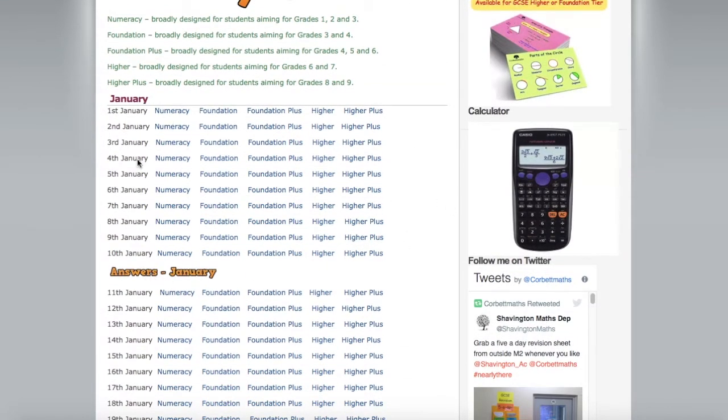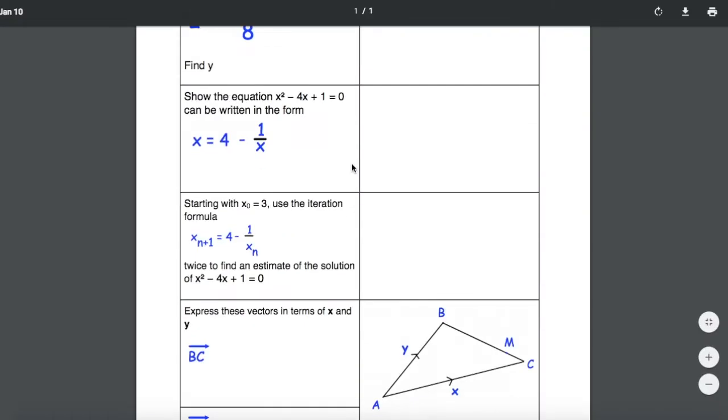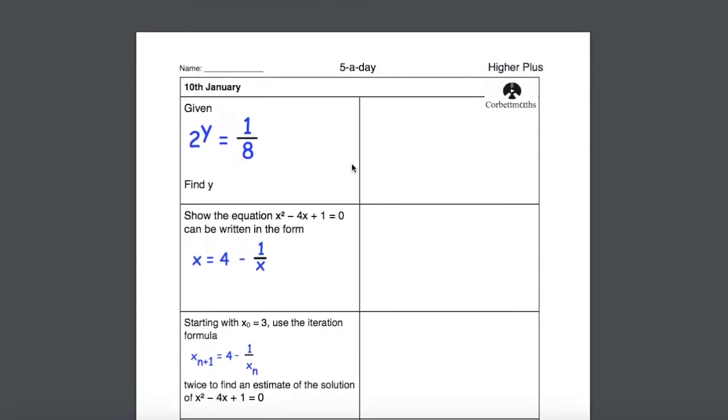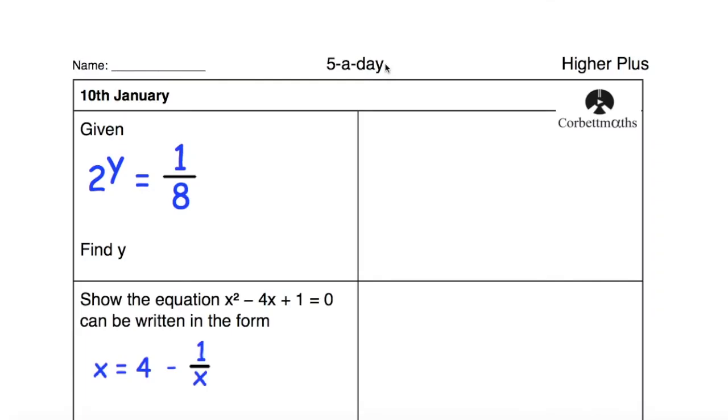So if I just go to any random link here, I might pick Higher Plus on, say, the 10th of January, and it comes up with five quick questions I can use to practice and help myself revise. So let's go ahead and do these five questions from 5-a-day.